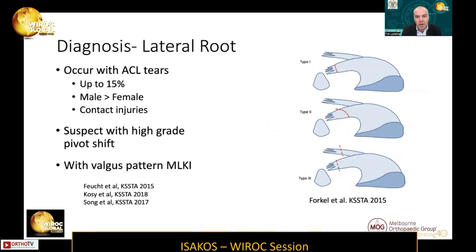We should be suspicious of a lateral root tear with a high-grade pivot shift, because as mentioned, they're associated with increased pivot shift grade, and they can also occur in multiligament knee injuries. A classification system has been proposed which takes into account injury to the meniscofemoral ligaments, which provide an additional stabilizing factor for the posterior root.